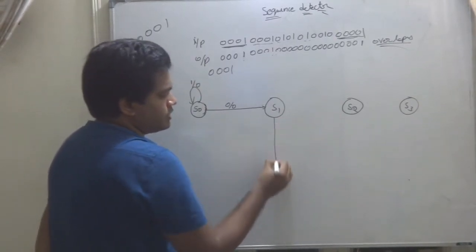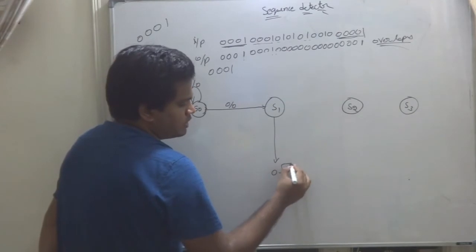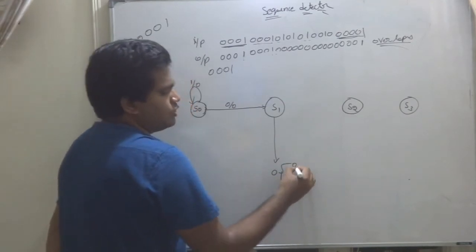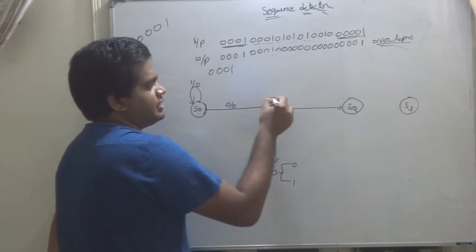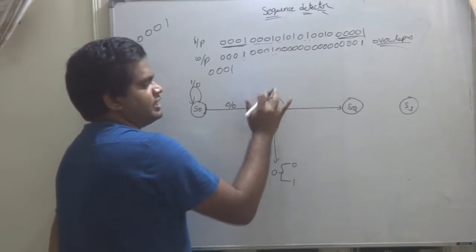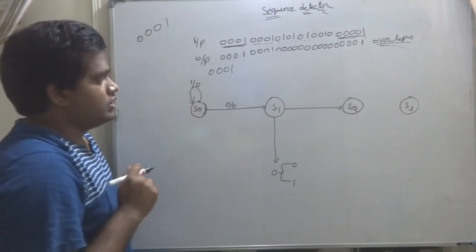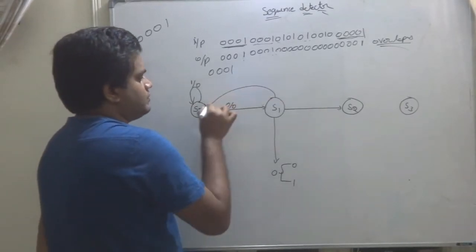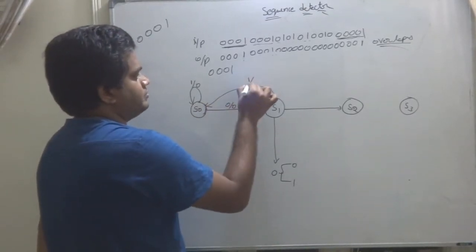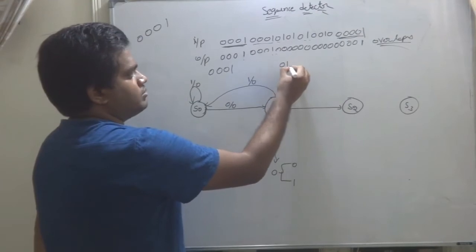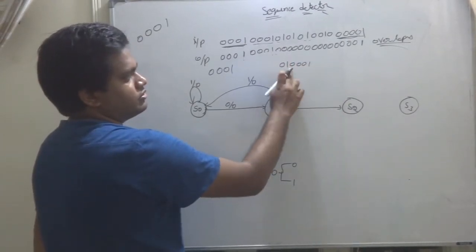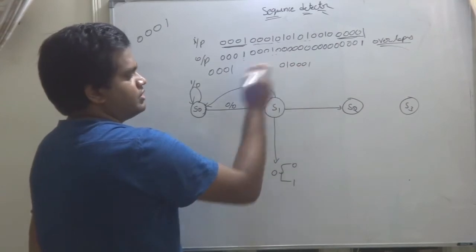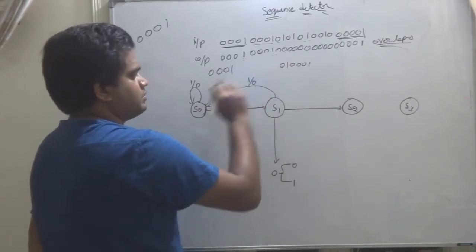Again, what is S1 state? 0 detector state. There is a possibility of 0 or 1. If 0 comes, if you go to this state, if 1 comes, what will happen? You have two possibilities. It has to be in S1 or S0. It will go to S0, because your sequence is not started. Because, if 01 comes, your next sequence need to be 001 only. That's why, again, if you need to come from start, that's why I put it here.